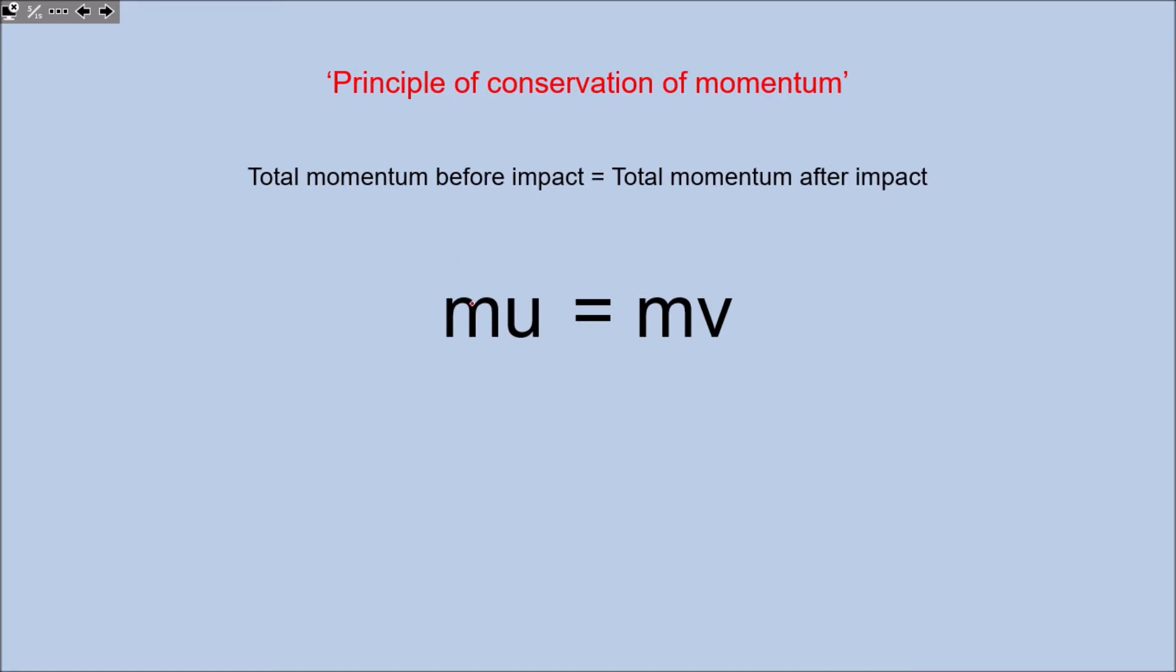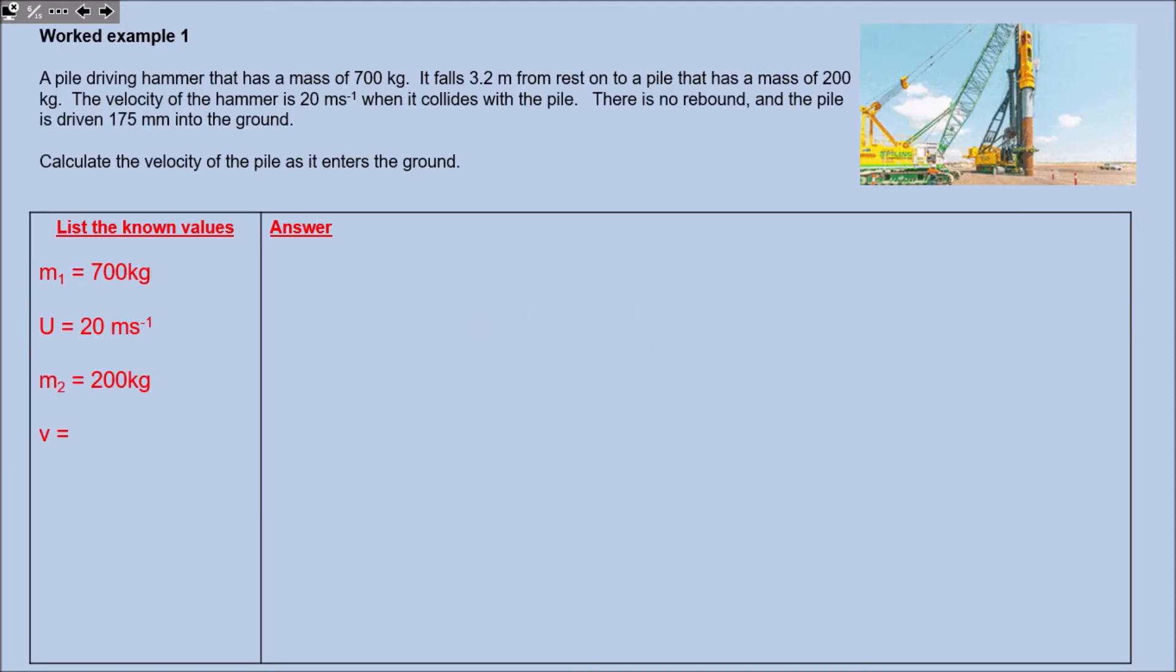The formula that links this: momentum equals mass times initial velocity - this is the before bit. If an object's moving, it's got initial velocity, and then the mass and velocity is for the after. Don't forget to check out the videos on SUVAT for what these u and v represent. You've got u as initial, v as final velocity. Let's go ahead and have a look at using this.